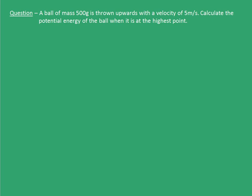Hello guys, before moving forward, let's take up a question related to potential energy. In this question, we have been given a ball of mass 500 grams that is thrown upwards with a velocity of 5 meters per second. We have been asked to calculate the potential energy of the ball when it is at the highest point.